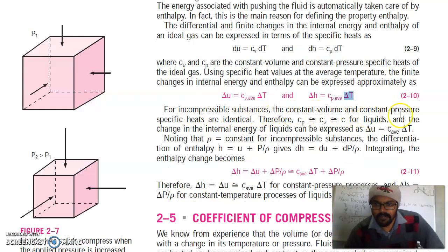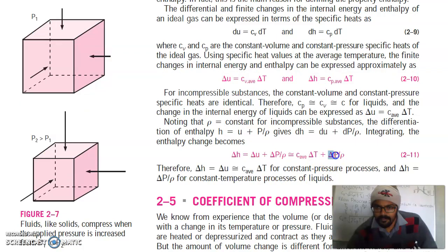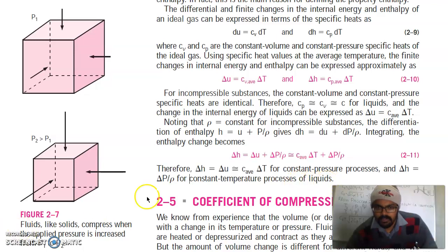For incompressible substances, the constant volume and constant pressure specific heats are identical. Therefore, these two are equal for liquids. And the change in internal energy of liquids can be expressed as a function of C average times delta T. Because at constant volume, these two are equal, so you can express in terms of this. Noting that rho is constant for incompressible substances, the differentiation of enthalpy gives del H equals del u plus del P over rho. For constant pressure processes, del H equals del u equals C average del T. And del H equals del P over rho for constant temperature processes of liquids.